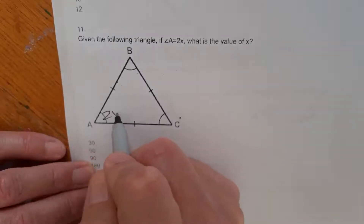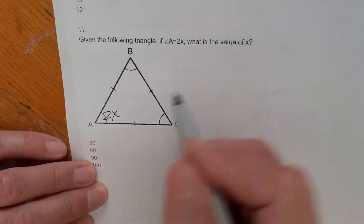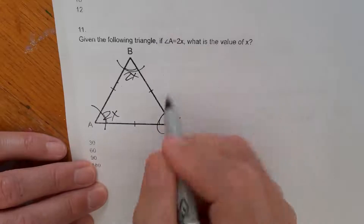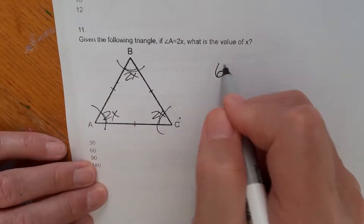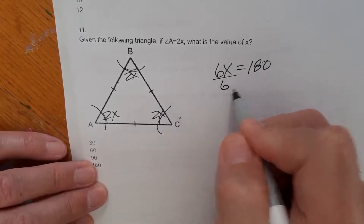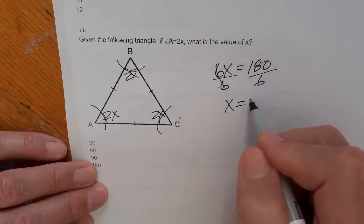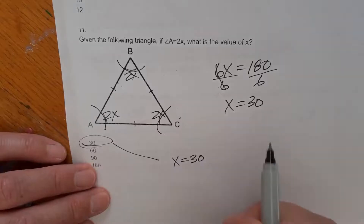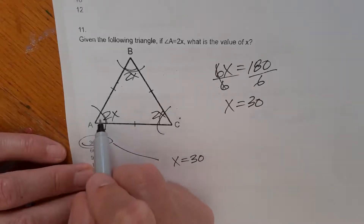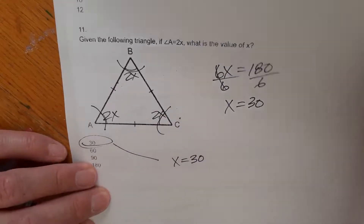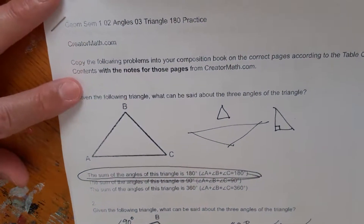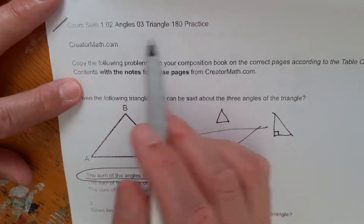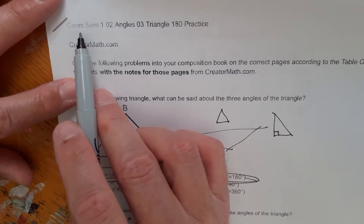Given angle A is 2X, what's the measure of X? This is an equilateral triangle, so all angles are 2X. That gives us 6X equals 180. Divide both sides by 6: X equals 30. So the actual measure of each angle is 2 times 30, which is 60 degrees. Make sure you are matching up the assignment name: this is geometry semester one, the second unit called angles, and the third lesson called triangle 180 practice on creatormath.com under the geometry tab. Hope this helps.